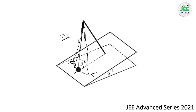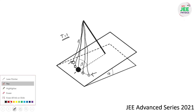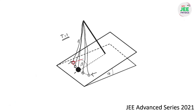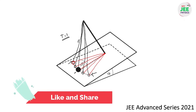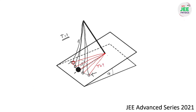Finding g_effective directly is a little tough here, so I simplify by considering the pendulum oscillating in the plane of the inclined plane. The time period for oscillations in that plane is the same as for the actual oscillations, because we are projecting the motion into the plane of the inclined surface.